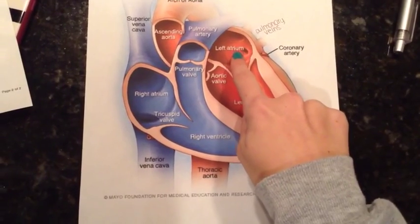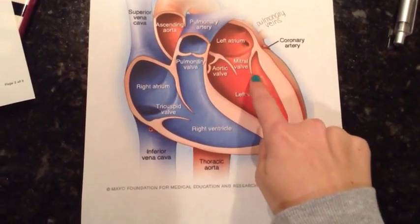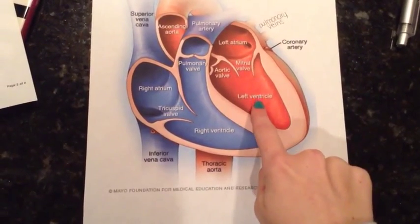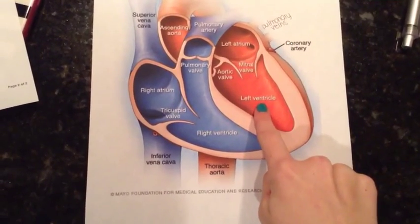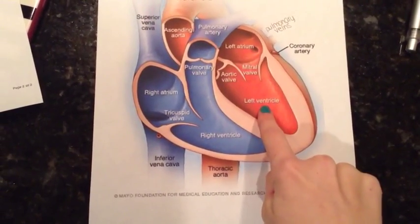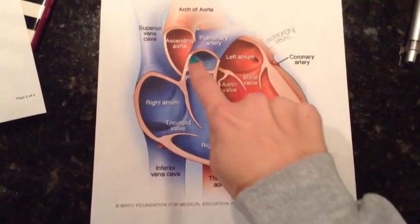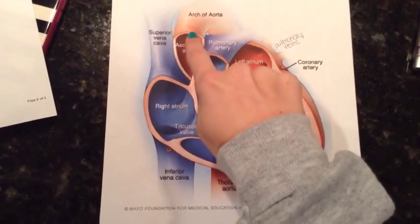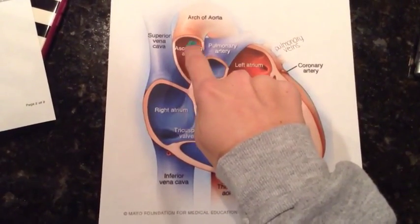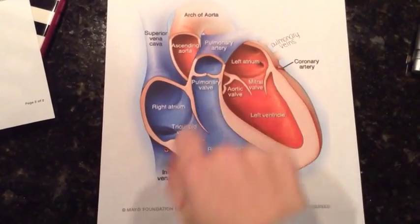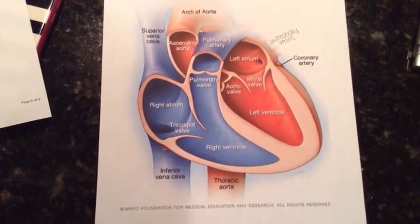From the left atrium, blood flows into the left ventricle. The left ventricle pumps the blood to the aorta, which will distribute the oxygenated blood to all parts of the body.